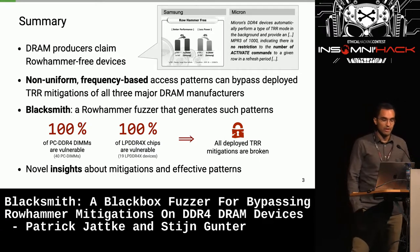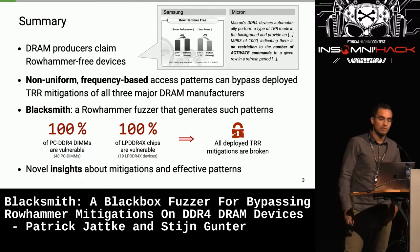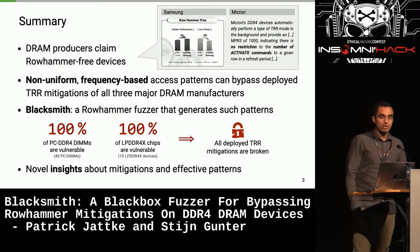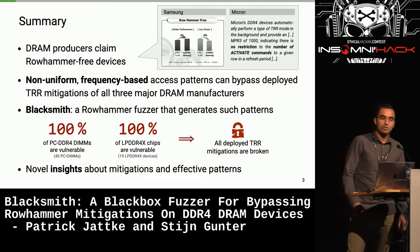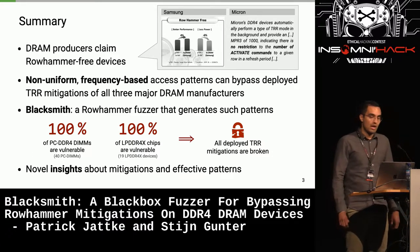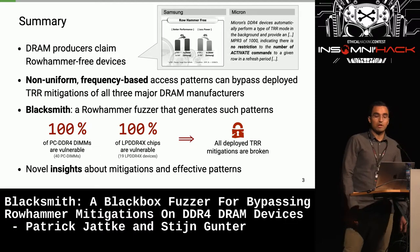Our work is motivated by claims from DRAM manufacturers who promised that their DRAM devices are rowhammer-free. For example, Samsung promised in their general assembly presentation that they have rowhammer-free devices, and Micron mentioned it in their product specifications. However, we show that we can craft novel frequency-based rowhammer access patterns that bypass all currently deployed mitigations on DDR4 devices. We built a fuzzer named Blacksmith and show that TRR mitigations on all PC DDR4 and LPDDR4X devices are broken.